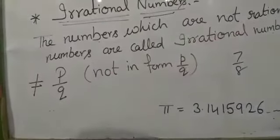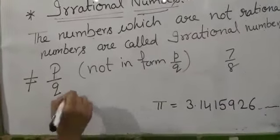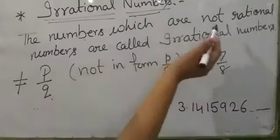We have already learned the numbers which are in the P upon Q form, we call as the rational numbers. That cannot be in this form, we call the irrational numbers.